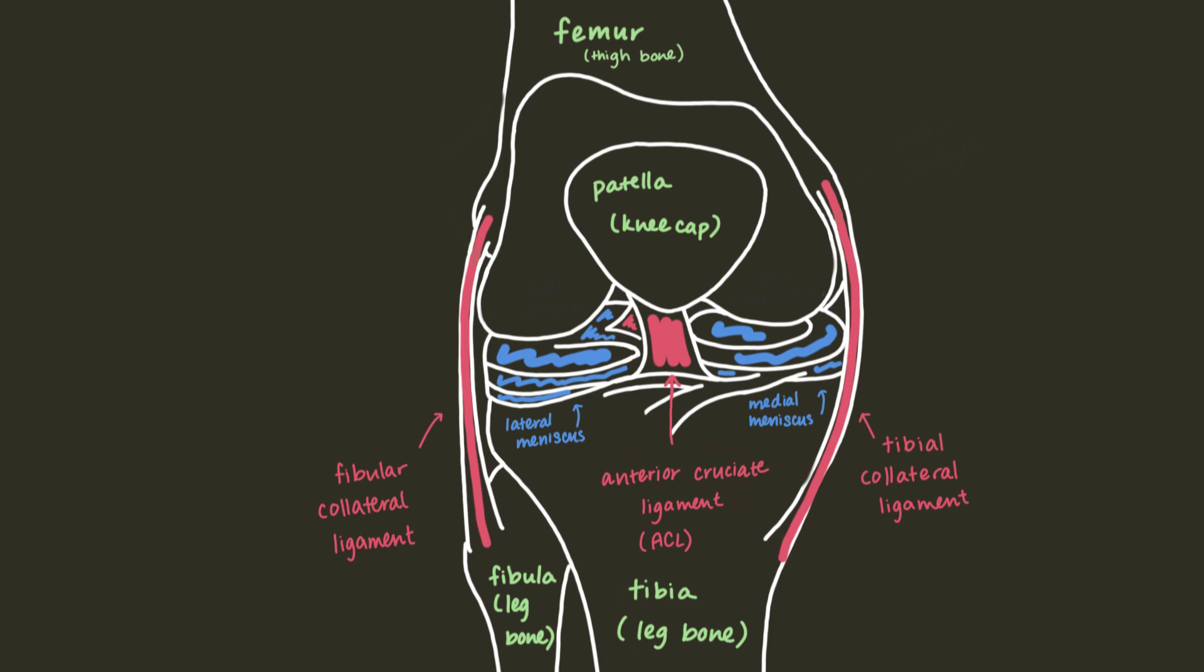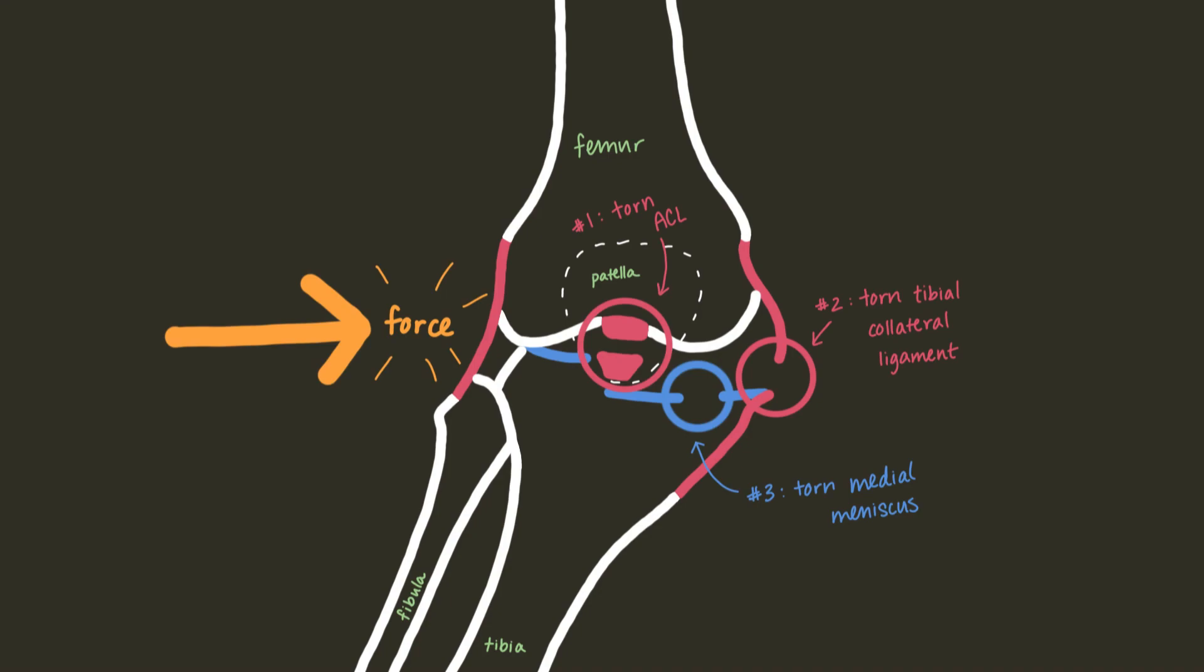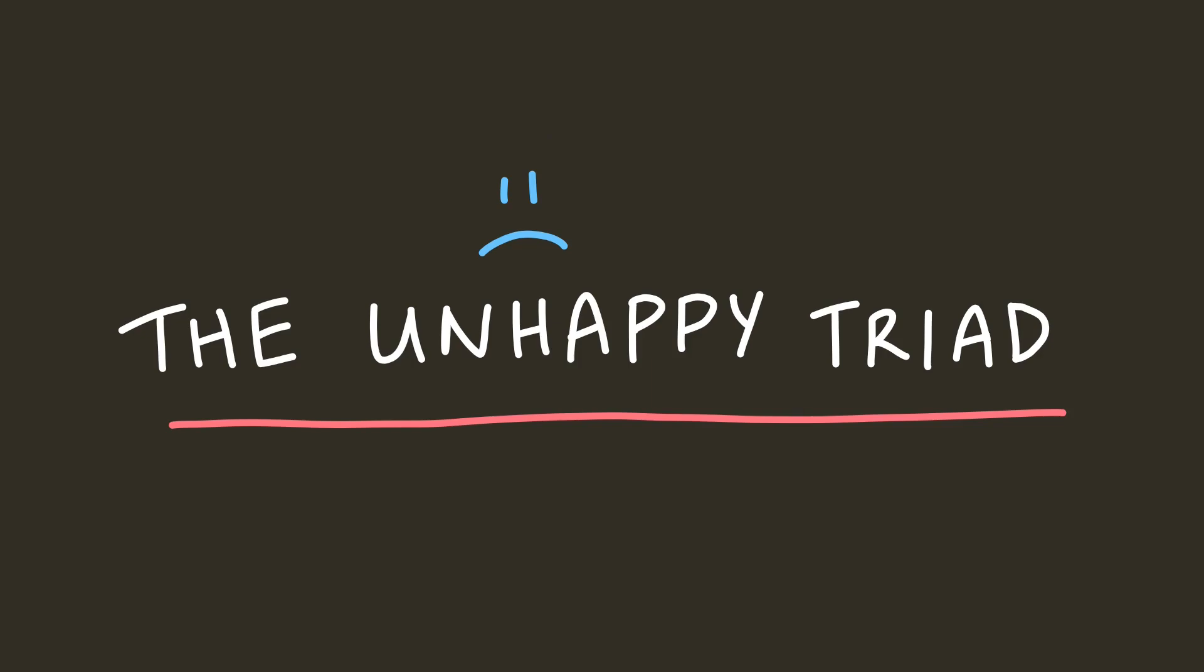The reason I highlight these ligaments in particular is because they're the offending parties in common knee injuries. The knee is very strong. It can bear a lot of force vertically, but it's vulnerable to horizontal forces. The worst is when the horizontal force is applied to a knee that's fully extended, because this can tear the ACL, the tibial collateral ligament, and the medial meniscus. This is a devastating injury referred to as the unhappy triad.